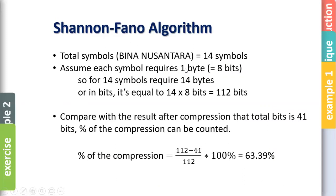So usually, a symbol requires 1 byte or 8 bits. So if 14 symbols, it means 14 bytes. Or in bits you need to multiply by 8. You got 112 bits. So the percent of the compression you just use these numbers. 112 minus 41, you divide by 112 and you multiply 100 percent. And then you get 63.39 percent. So you compress BINA NUSANTARA with those codes. You get 63 percent compression.